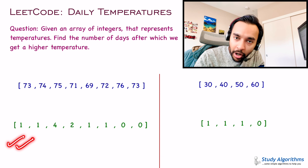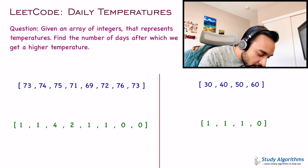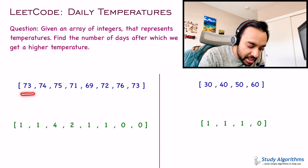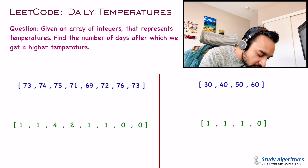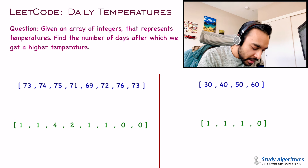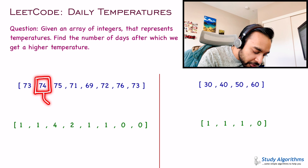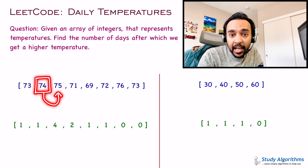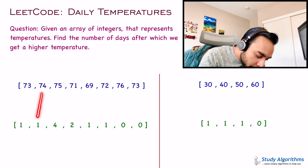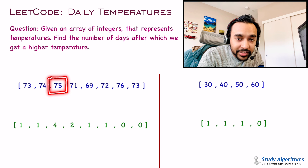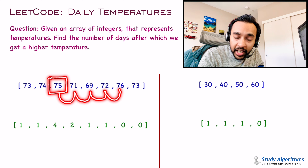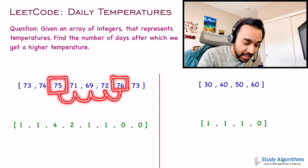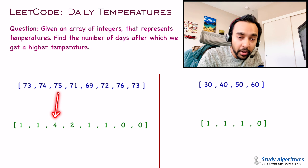For test case number 1, this is your output array. For example, if you look at the temperature 73 — if you move one day ahead, you see a higher temperature that is 74, and that is why you put 1 in your output. Move on to the next day, 74. After one day, you see the temperature is 75, and that is higher. So for 74 you simply put 1. Moving on to 75, after how many days do you see a higher temperature? 1, 2, 3, 4. After 4 days you see a higher temperature that is 76. So you will put down 4 in your output array.